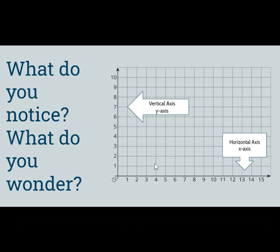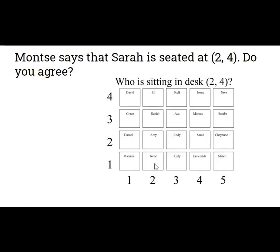Let's continue talking about the points on the coordinate plane. Look at this seating chart. Monza says that Sarah is seated at (2, 4). Do you agree? Pause the video now and see what you think.